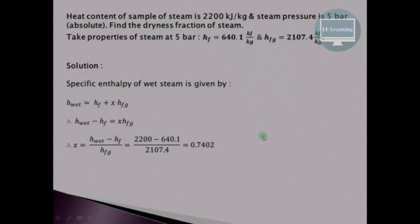Since we have to find the dryness fraction, this is a wet steam. For wet steam, the formula for specific enthalpy is: H_wet = HF + X·HFG. Therefore, X = (H_wet − HF) / HFG. Substituting the values, the dryness fraction X comes out to be 0.7402.